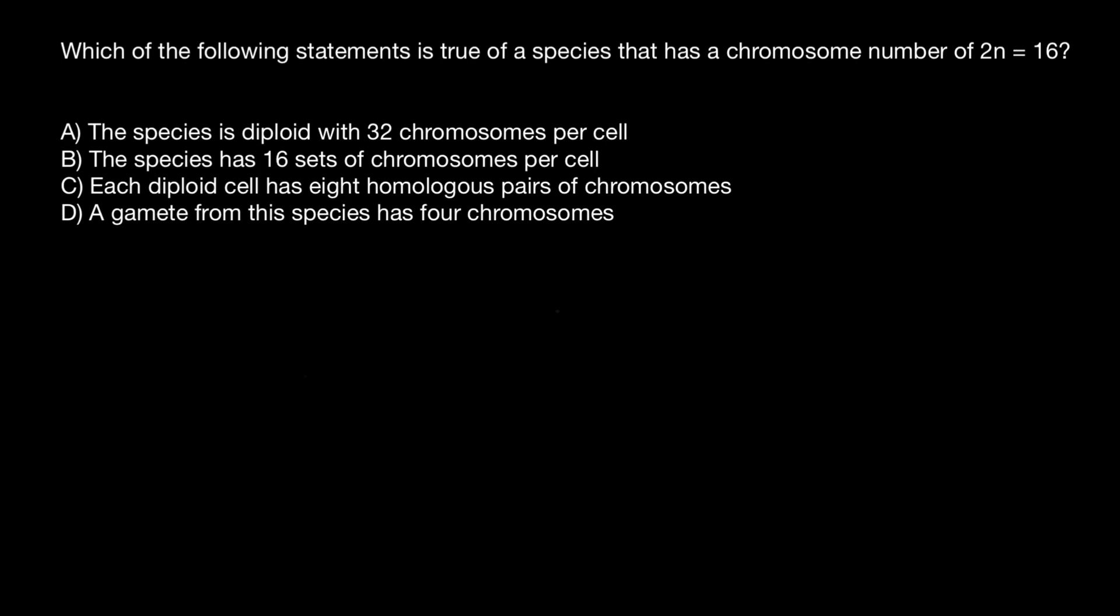Hello, and welcome to Nikolai's genetics lessons. Today's question is, which of the following statements is true of a species that has a chromosome number of 2N = 16? And here are the variants to choose from.